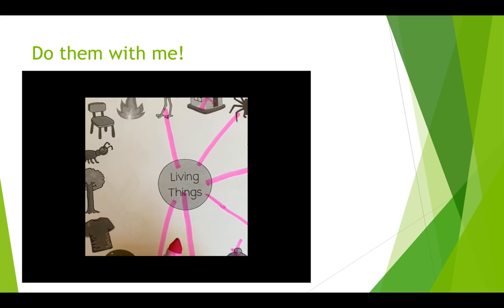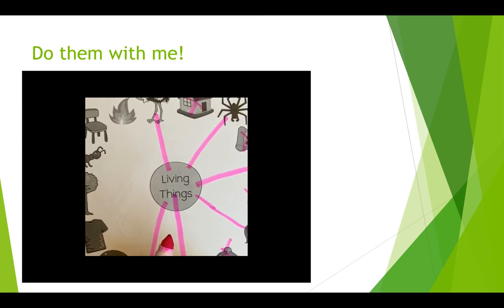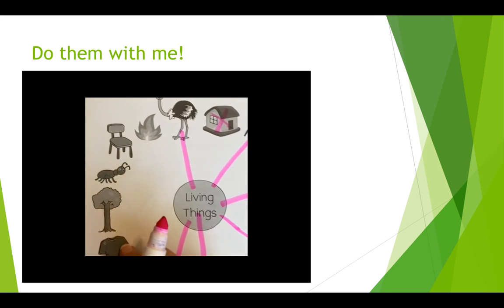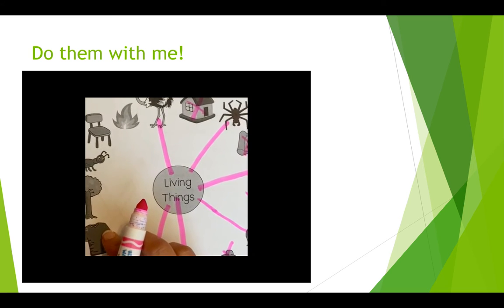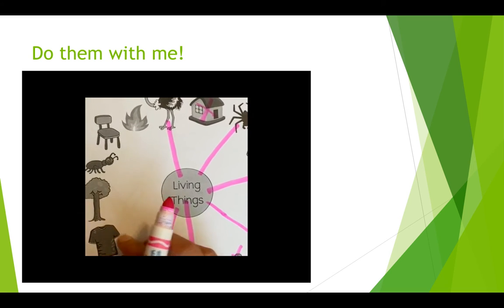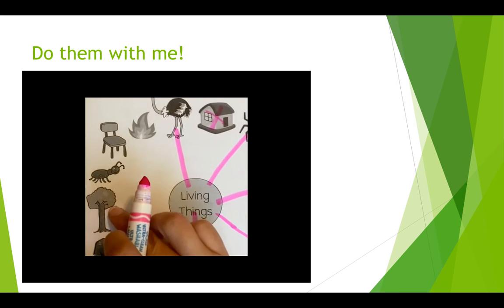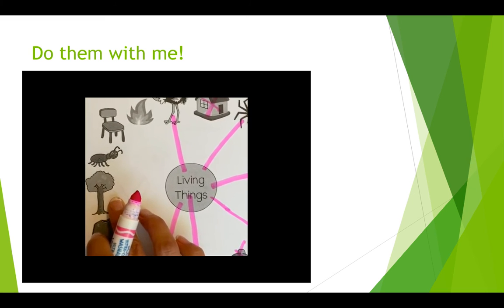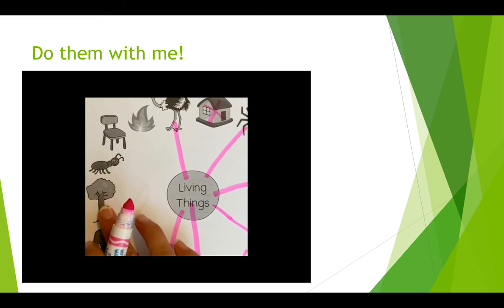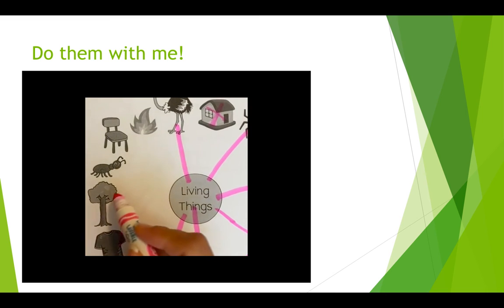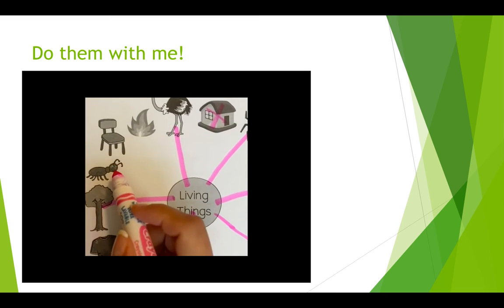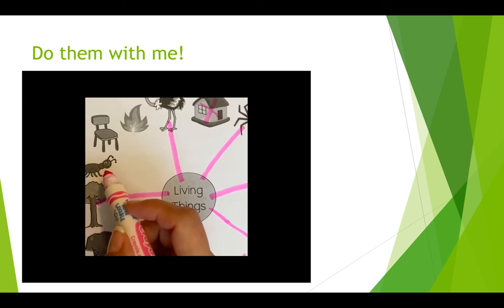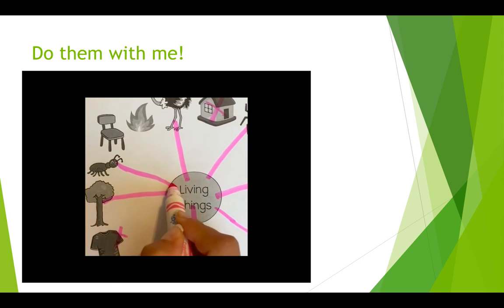And what about the moon? Does the moon eat, grow, move, and make more moons? No. So we're going to put an X on it. Then we go to this shirt. Does the shirt eat, breathe, grow, or reproduce? No. So we put an X on Mr. Shirt. Then we go to the tree. Does the tree eat, breathe, move, grow, or reproduce? Yes, the tree does because it makes leaves, it makes oxygen, and it makes more trees. And then what about this little ant? Does it eat, breathe, grow, move, and reproduce? Yes, it sure does. So we put a line there.